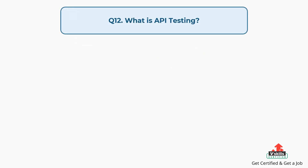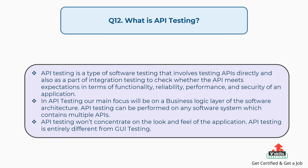Question number twelve: What is API testing? API testing is a type of software testing that involves testing APIs directly and also as part of integration testing to check whether the API meets expectations in terms of functionality, reliability, performance, and security. In API testing, the main focus is on the business logic layer of the software architecture. API testing can be performed on any software system which contains multiple APIs, and won't concentrate on the look and feel of the application. API testing is entirely different from GUI testing.